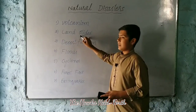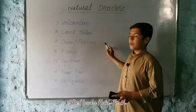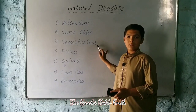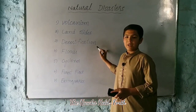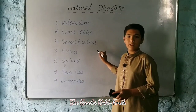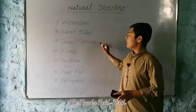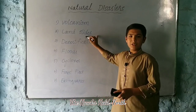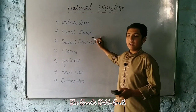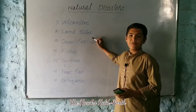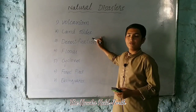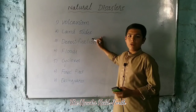Number two is called landslides. Landslides are the most common and severe natural hazards in mountainous regions of Pakistan. In Pakistan's northern mountainous regions like Chitral, Dir, Kagan, Naran, and Swat, landslides are a major concern. Simply defined, landslides are the downslope movement of rocks under the influence of gravity.